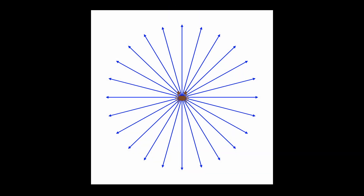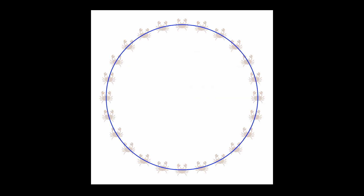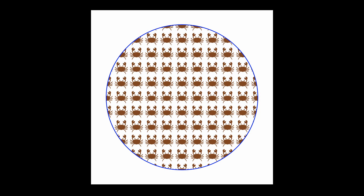Last time I introduced a mathematically minded crab which was able to determine the dimensionality of its universe by measuring how much space it covered moving different distances in every possible direction. If you missed that episode you might want to check it out now since I'll be building on it in this episode. You'll find the link in the show notes.